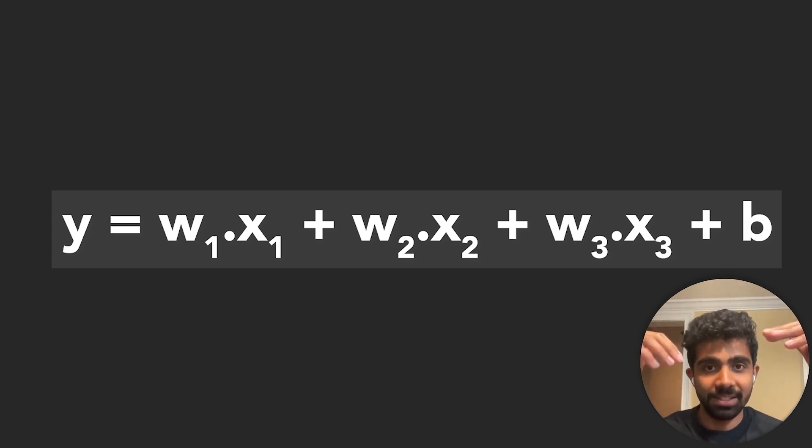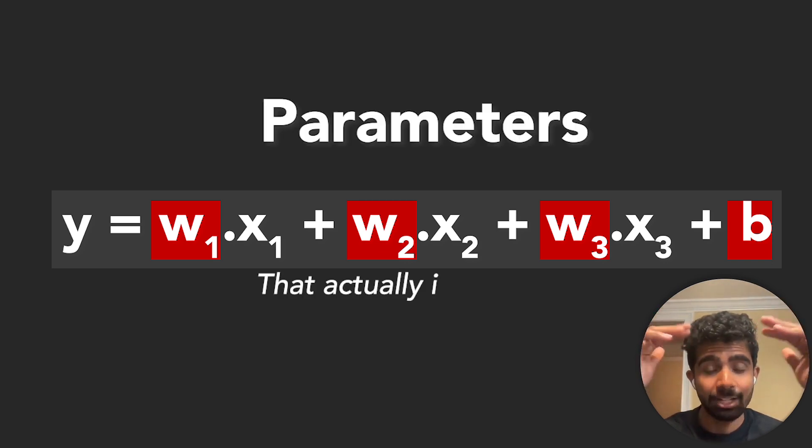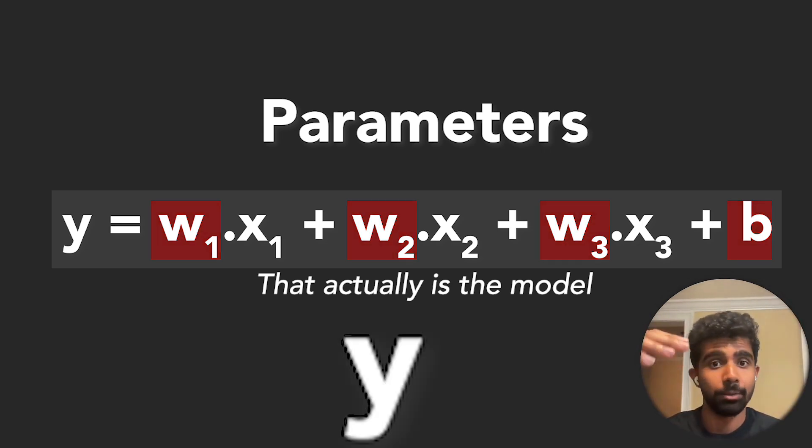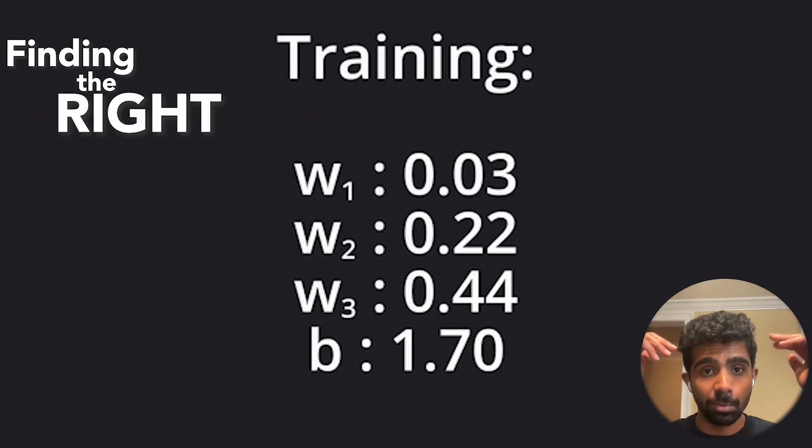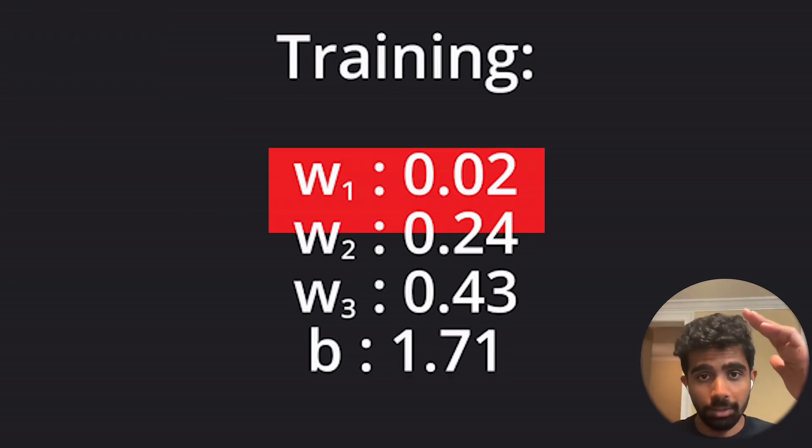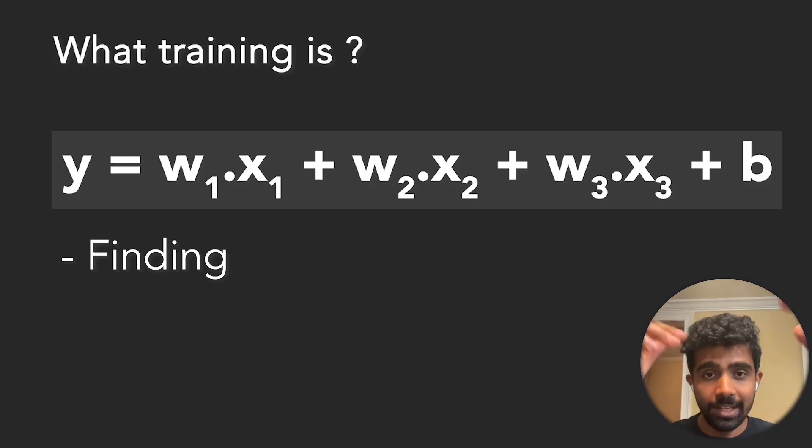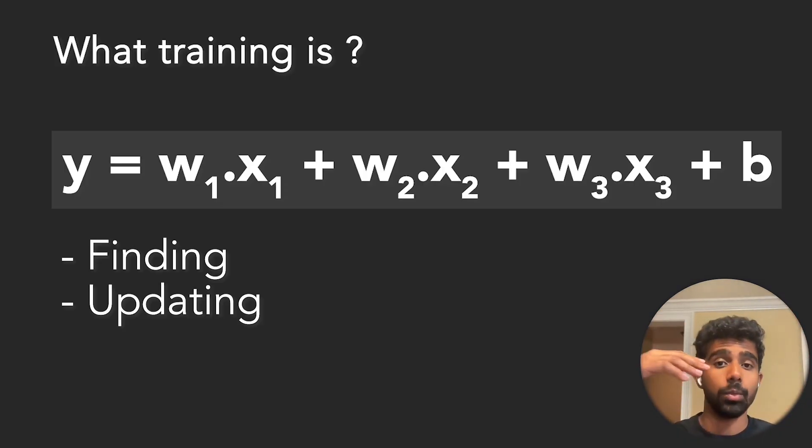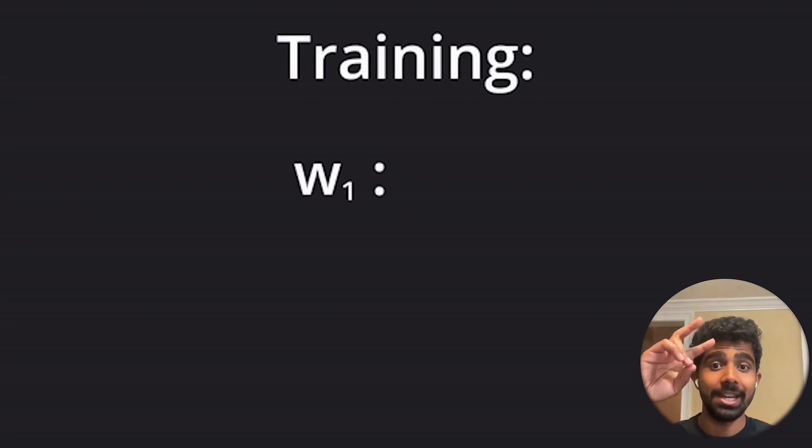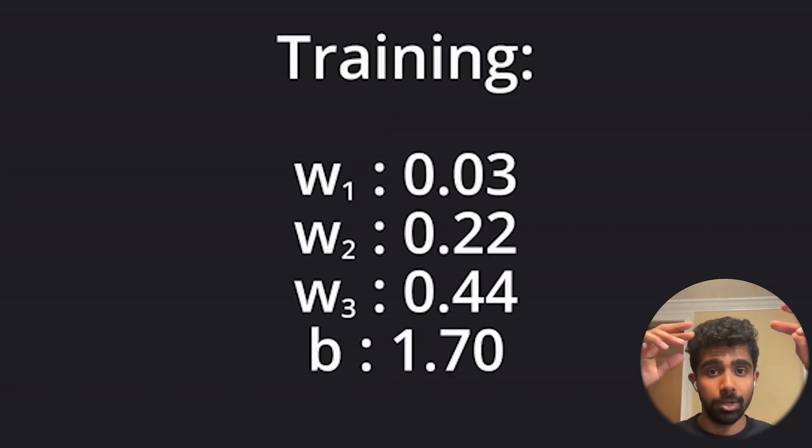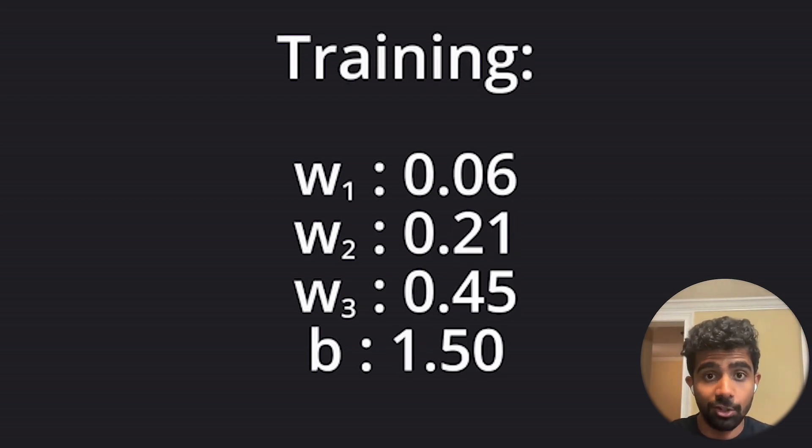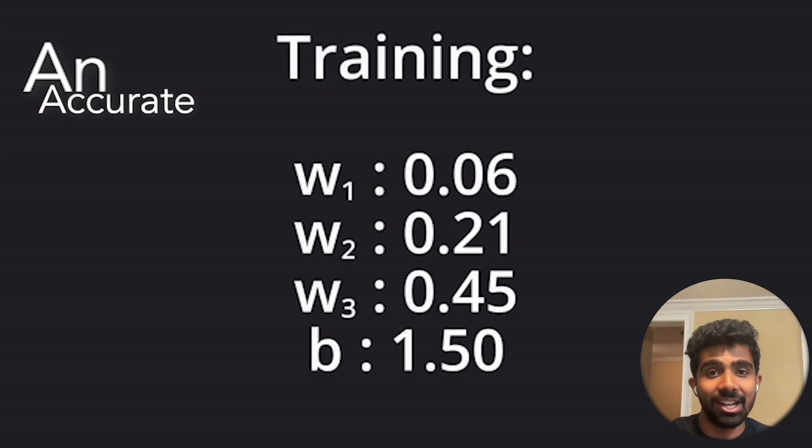That's what the model is predicting. That's what the value Y represents. But in the equation, we also have these other numbers: W1, W2, W3, and B. Those numbers are called the parameters, and that actually is the model. Those are the numbers that the model uses to actually make its prediction Y whenever we pass in X1, X2, and X3 for any arbitrary person. So training is just finding the right values of those parameters, W1 through W3 plus B. It's about finding and updating those values until we're satisfied with the model's prediction Y, until we feel like it's accurate enough. When we initialize the model, we'll have totally random numbers for W1 through W3 as well as B. But over the course of training, this iterative process, we'll be adjusting those values until we actually have an accurate enough model.